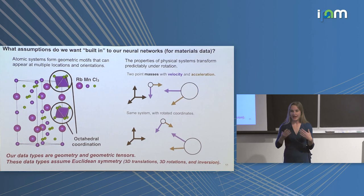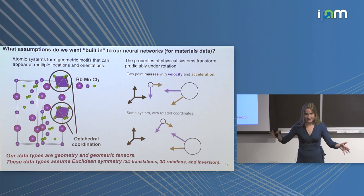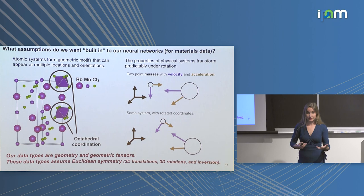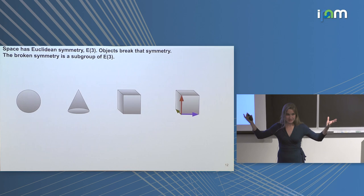Given these assumptions, my data types are geometry — where coordinates are in 3D space — and geometric tensors, the types of properties that exist on this geometry that transform predictably under rotation. Both of these assumptions mean I have a system that obeys Euclidean symmetry: 3D space has 3D rotational symmetry and translational symmetry. Space itself with nothing in it has these symmetries.